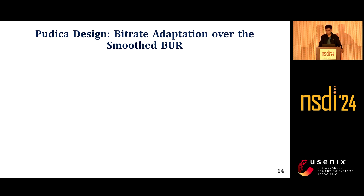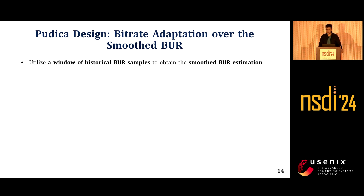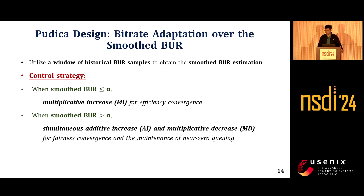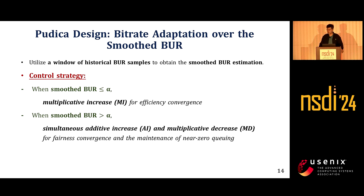Next, let me introduce how we utilize BR to control the frame bitrate. Our approach begins by using a window of historical BR samples to obtain a smoothed BR estimate. Then, similar to VCP, we decouple the convergence of efficiency and fairness. When the smooth BR falls below a predefined threshold called alpha — set to 0.85 in our work — Piotica employs multiplicative increase for efficiency. When the smooth BR exceeds alpha, Piotica simultaneously performs additive increase and multiplicative decrease to ensure fairness while maintaining near-zero queuing.